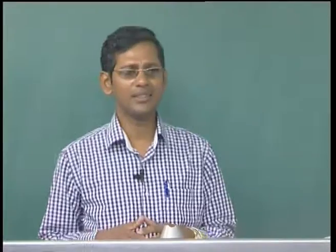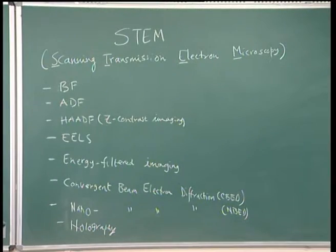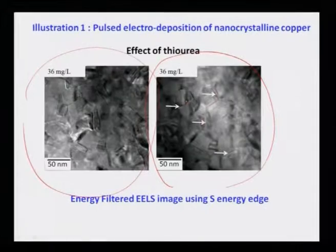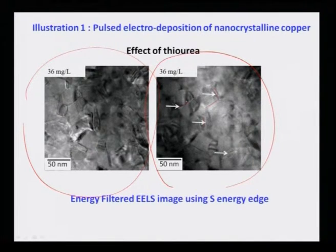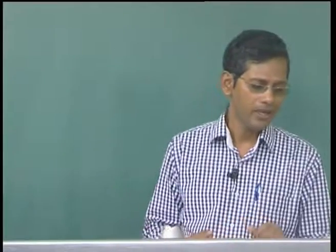This is now done routinely, especially in catalysis research, to clearly identify where a particular element is present. One can obtain images to the resolution of the transmission electron microscope showing where a particular element is located. In STEM mode, images can also be formed using low-energy secondary electrons, Auger electrons, or characteristic X-rays.